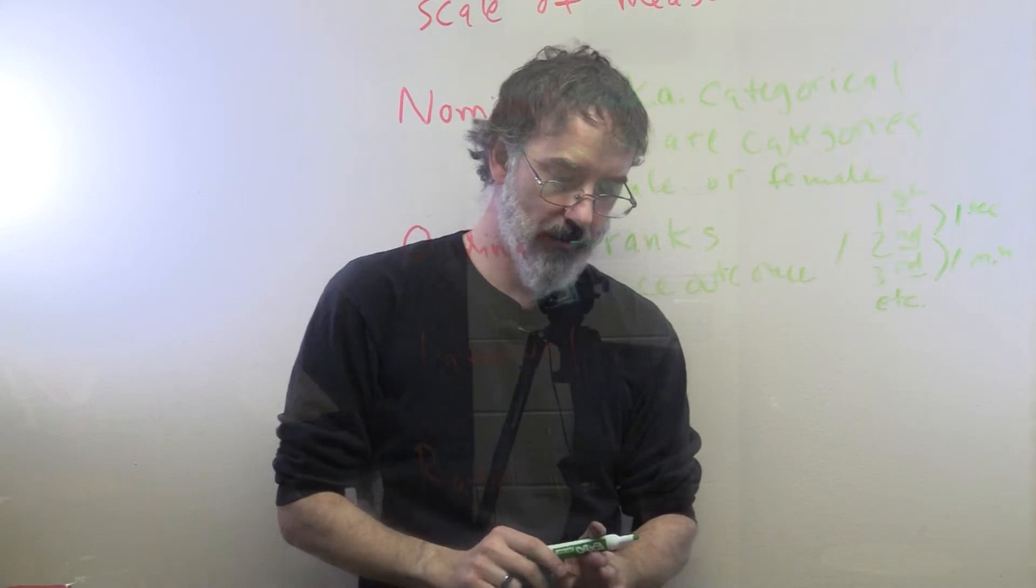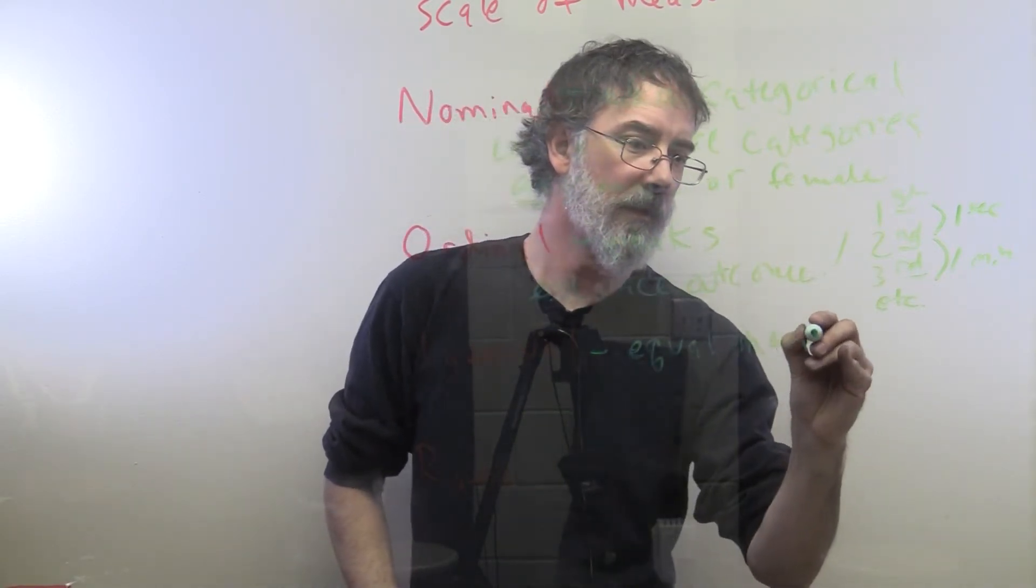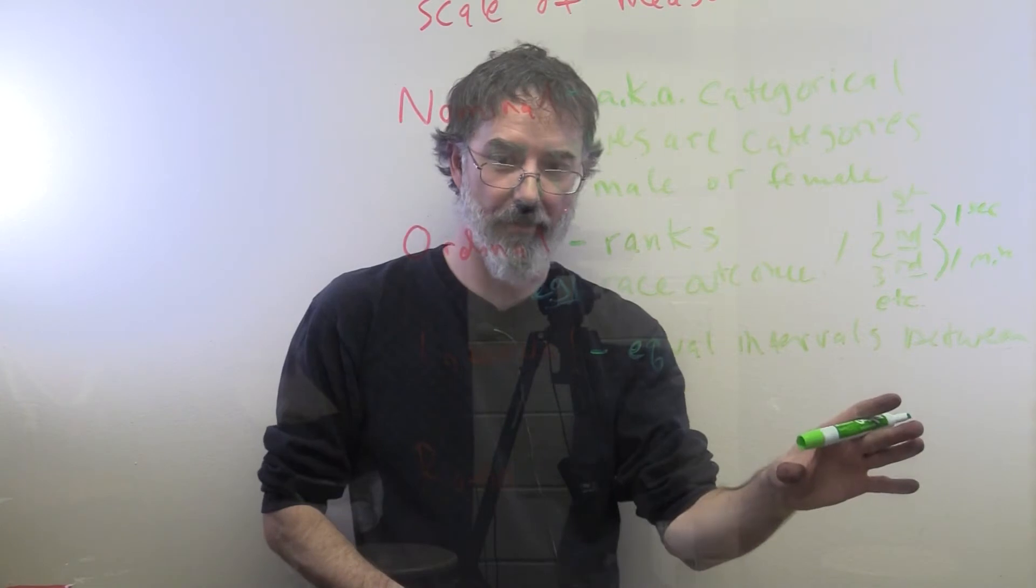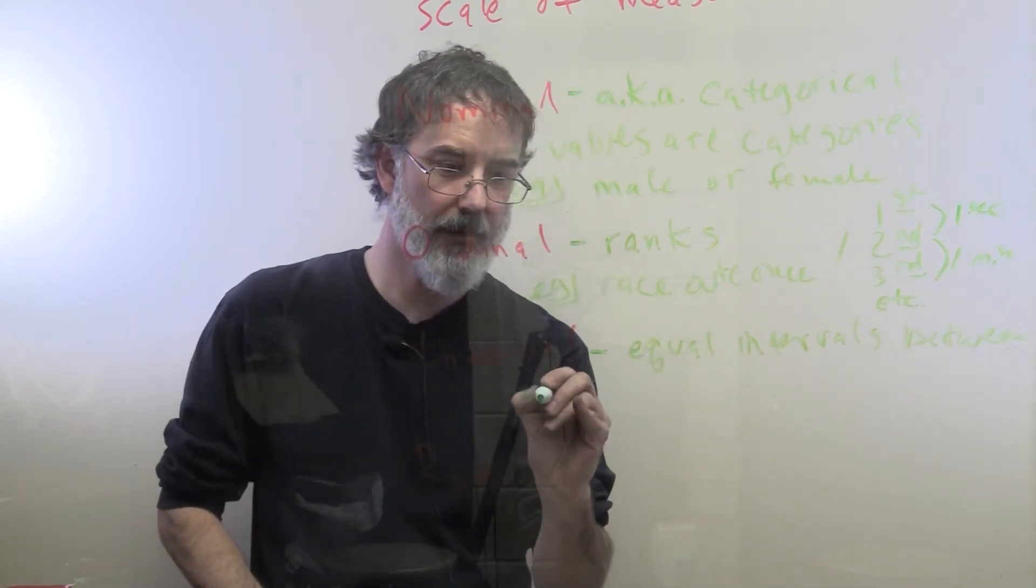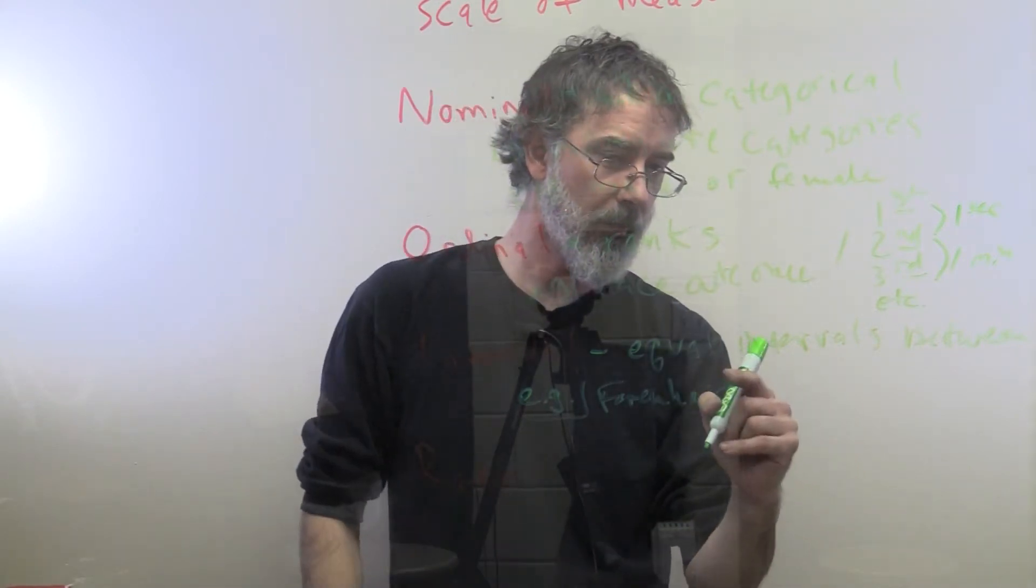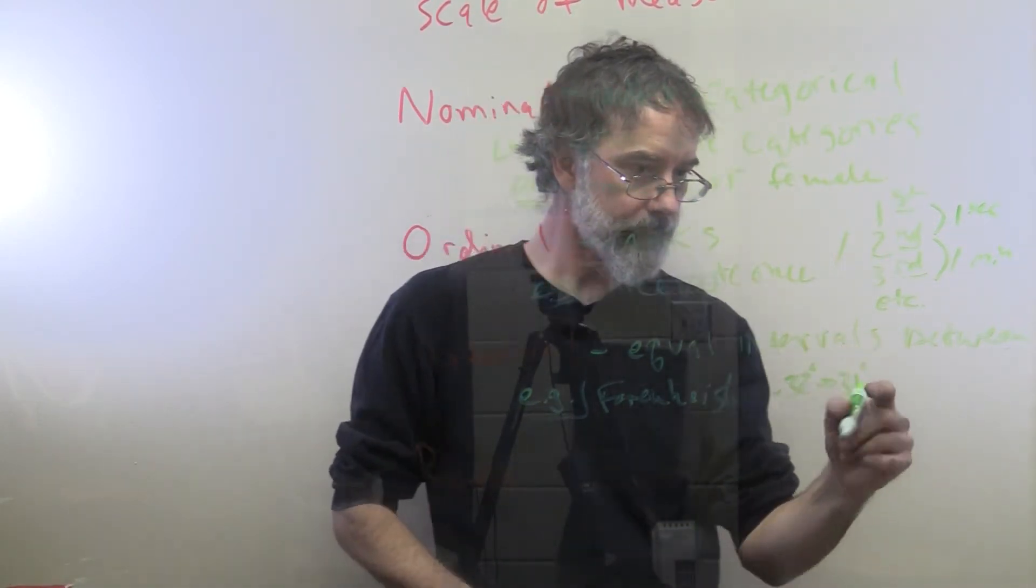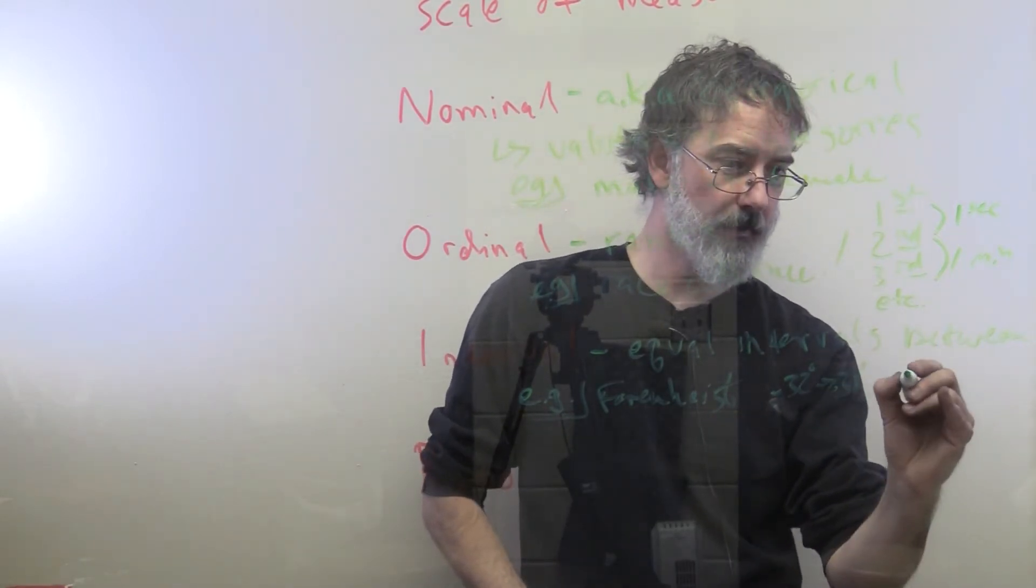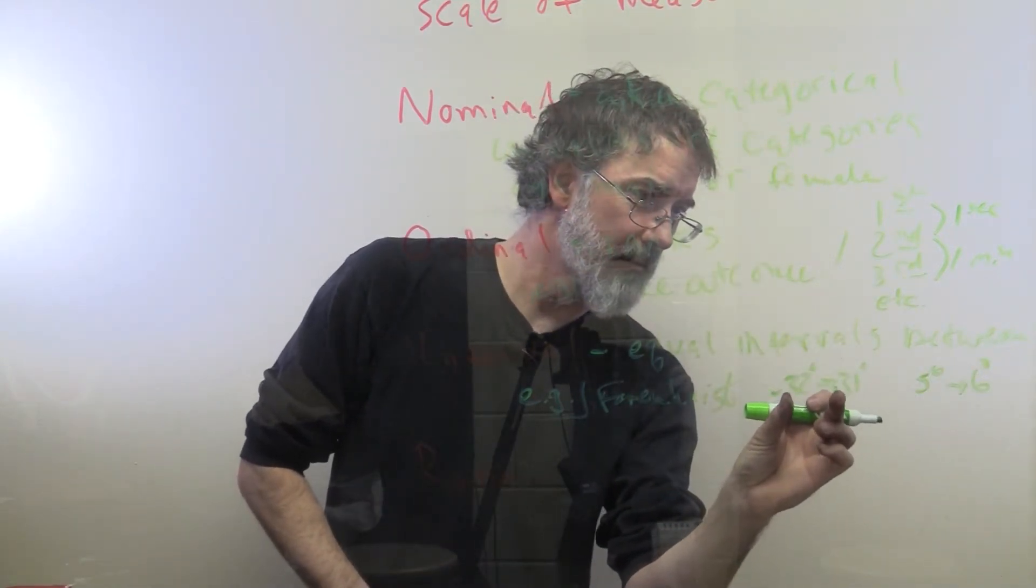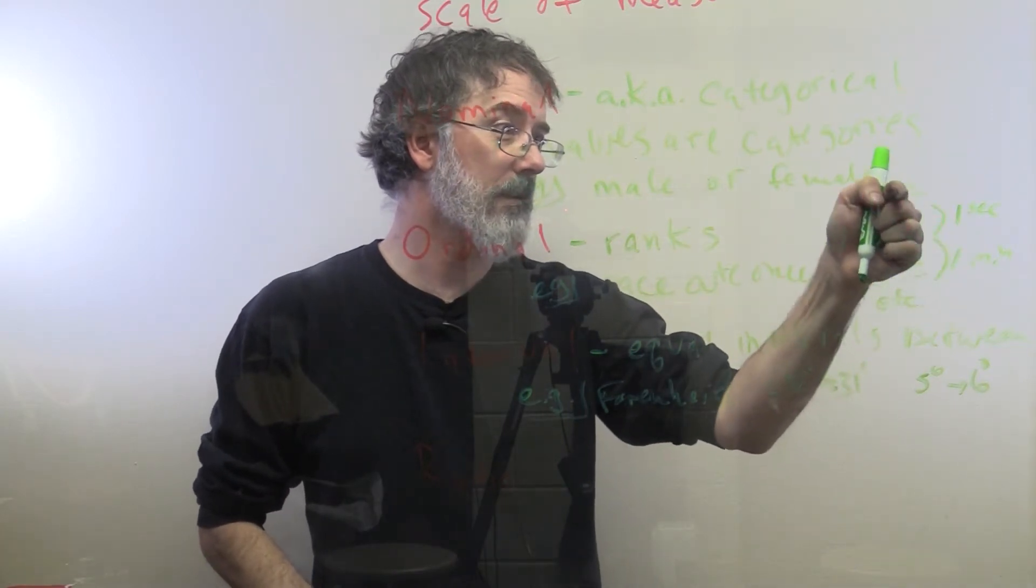Then the last two scales of measure are interval and ratio. For interval, there are equal intervals between values. For example, a variable that has that would be Fahrenheit temperature. Here, the equal interval would mean that to go from 32 degrees to 31 degrees, that one degree change is the same amount as going from 5 degrees to 6 degrees. That one change in the values is the same regardless of where you are on the scale, which is unlike what rank order was, where you do not know how close these two are compared to how close these two are.